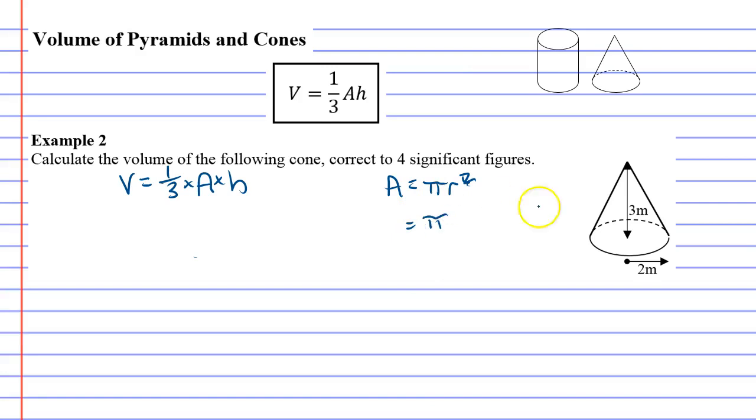Pi times—now r is from the middle to the edge, so r is 2—pi times 2 squared, which gives us 12.57 meters squared for the area of the base of the circle.